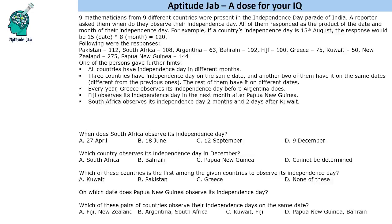Hello everyone, welcome to Aptitude Jab. This set says that there are 9 mathematicians from 9 different countries. They were present in the Independence Day Parade of India. A reporter asked them when do they observe their Independence Day, and they responded as the product of the date and month of their Independence Day.